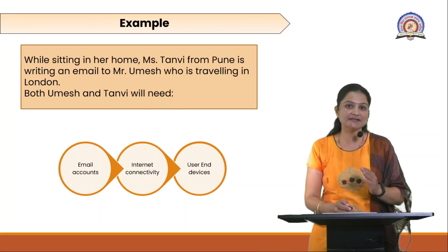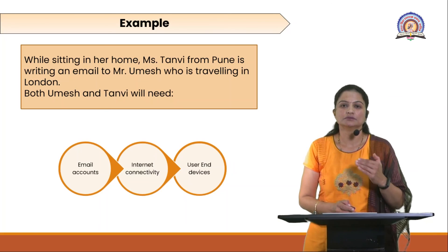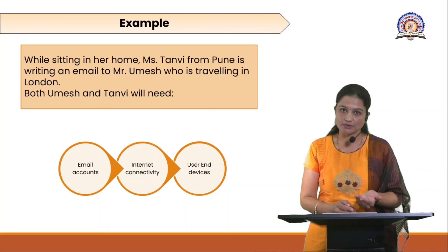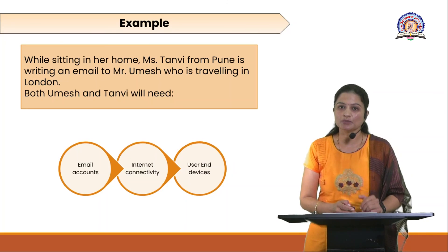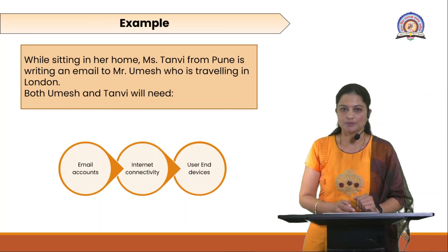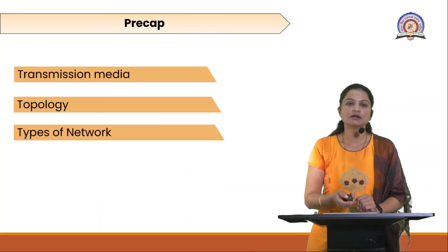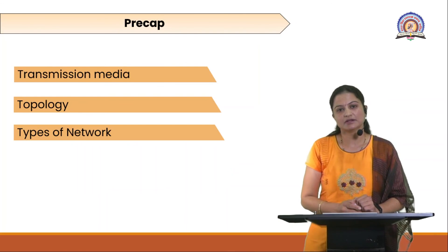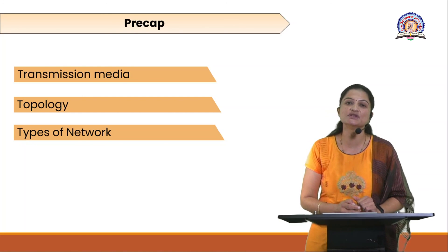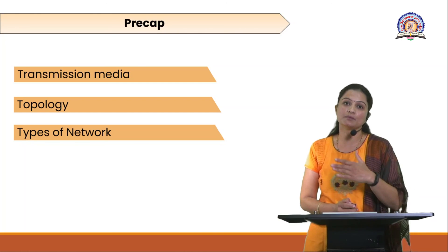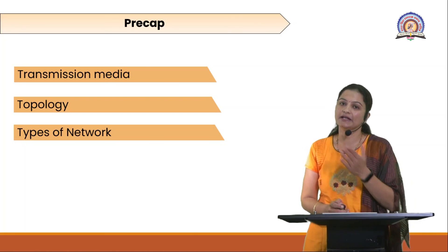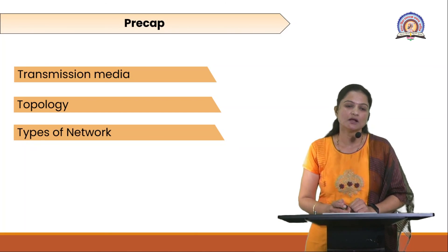These are the basic concepts that give you an idea about what communication is, what a communication network is, how telecommunication happens, and the number of components included within a communication system. In our next session, we are going to cover transmission media — the different types of transmission media including wired, wireless, optical, and electromagnetic.